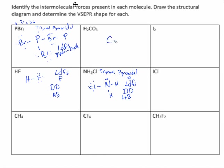H2CO3 is a difficult Lewis structure to draw, but it would look something like this: a carbon double bonded to an oxygen, with another oxygen on each side, and the hydrogens go on those oxygens. The shape around the carbon is trigonal planar because there are three domains. It ends up being a polar molecule because if you cut it in half, it's not the same on both sides.